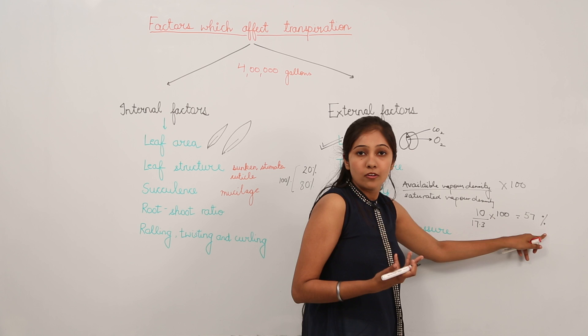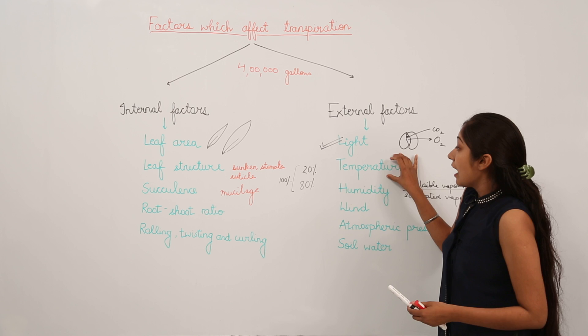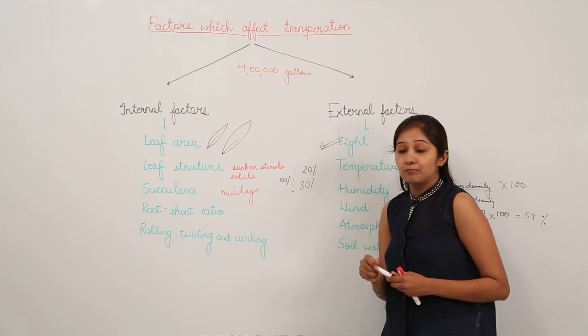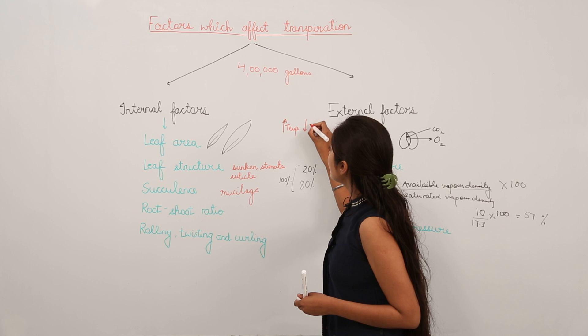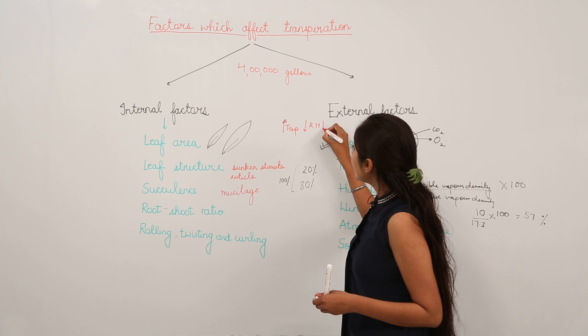When we consider relative humidity in relation to temperature: higher the temperature, lesser will be the relative humidity, and this leads to an increase in the rate of transpiration.